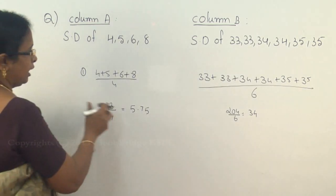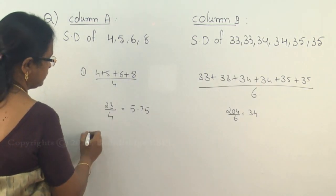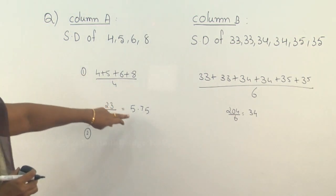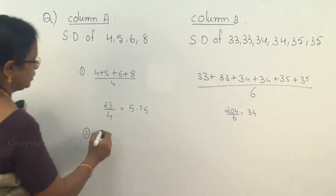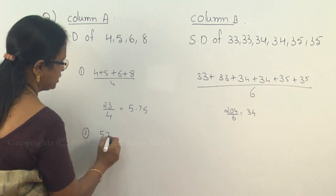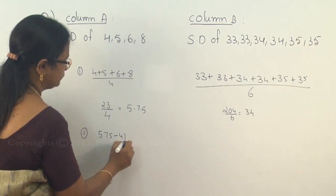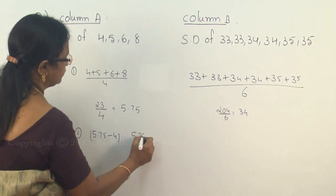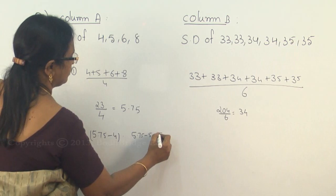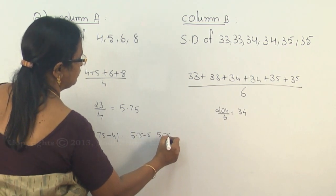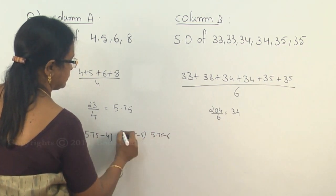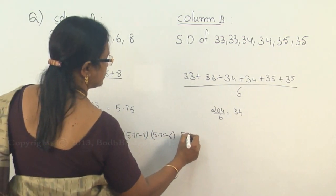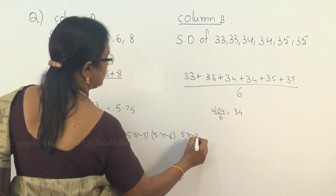After taking each of this, this is the first rule. The second one is find the difference of the mean and the number. So here 5.75 minus 4, and then 5.75 minus 5, 5.75 minus 6,